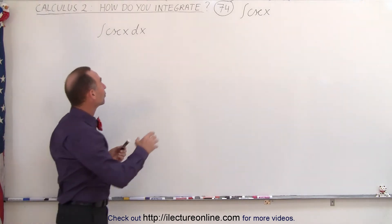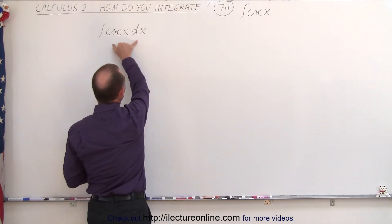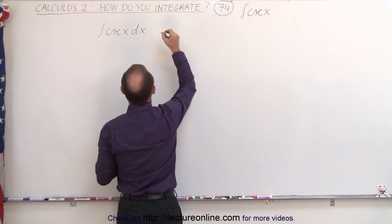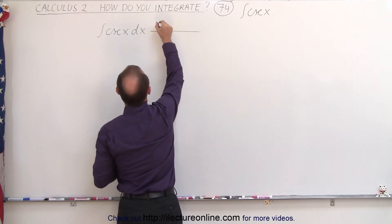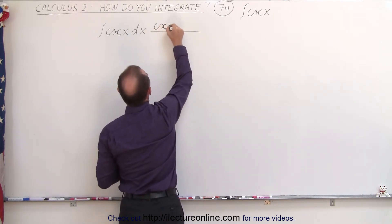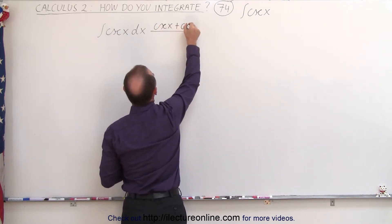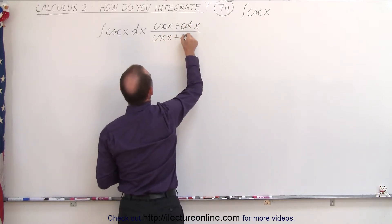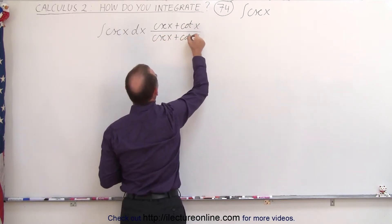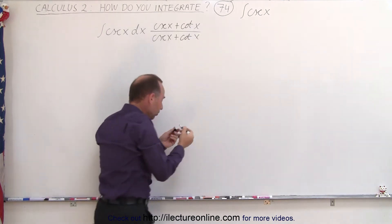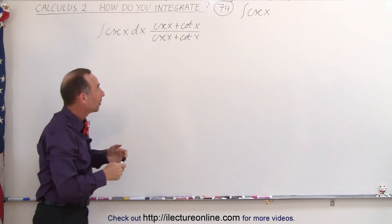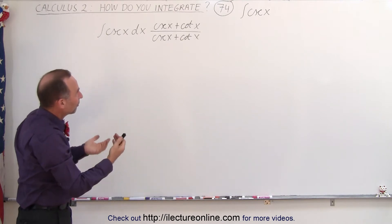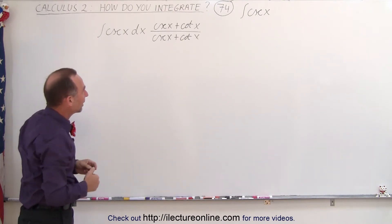It turns out, if you're going to multiply the integrand here by the following fraction — the cosecant of x plus the cotangent of x, over the cosecant of x plus the cotangent of x — in essence, we're multiplying the integrand by 1, but a very special one.